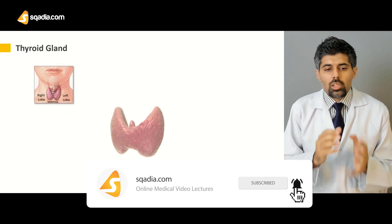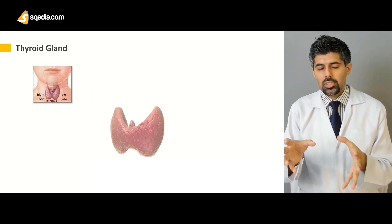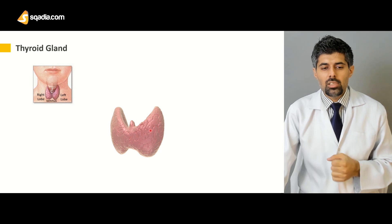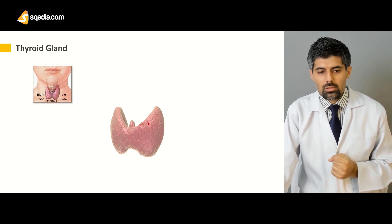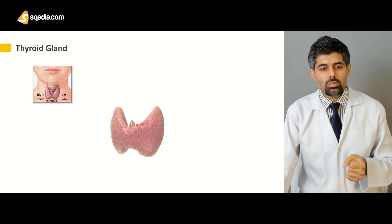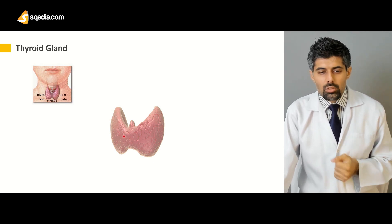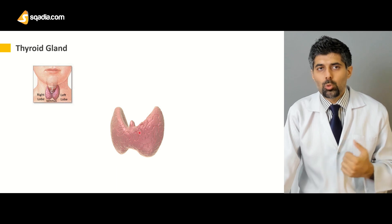Now, when the thyroid gland is seen from another angle from the side, we can easily appreciate both of its lobes which lie both anteriorly and laterally, with the bridge which joins both of them.